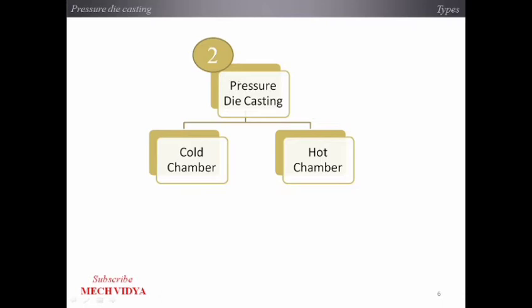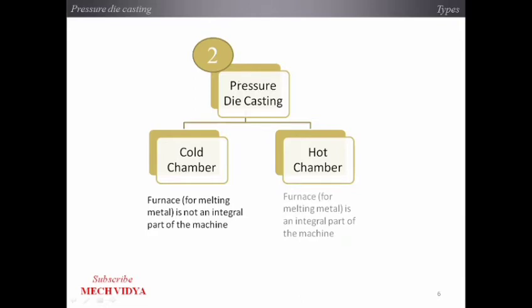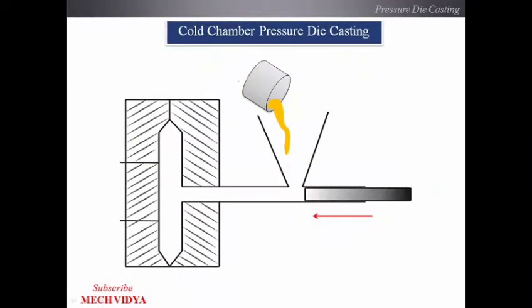What differentiates these two is that in cold chamber pressure die casting, the furnace is not part of the machine — it will be located somewhere away from the die casting machine. But in hot chamber pressure die casting, the furnace is actually an integral part of the machine. Now let us look at the schematic diagram of cold chamber pressure die casting and understand its different parts.